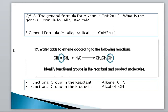Question number 18: The general formula of alkane is CNH2N+2. What is the general formula of alkyl radical? The general formula for alkyl radical is CNH2N+1, because one hydrogen is reduced. In this way, the alkane is converted into an alkyl radical.